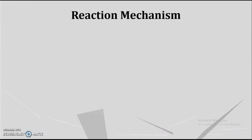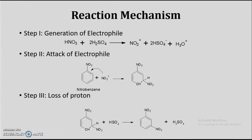Let's see what is the mechanism involved in this particular synthesis. As we are aware, the different steps involved in the electrophilic substitution reaction are: step 1 is generation of electrophile, step 2 is attack of electrophile, and step 3 is loss of the proton. Generation of electrophile takes place by the reaction between nitric acid and sulfuric acid, which leads into the formation of the nitronium ion. These are known as the electrophile.